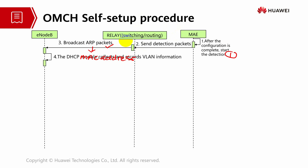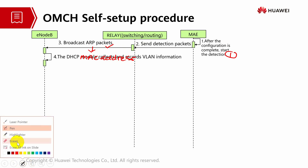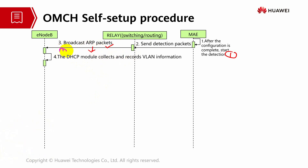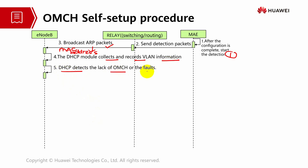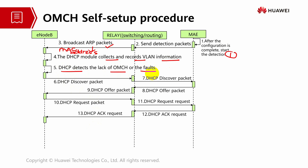The DHCP module will collect and record the VLAN information. The eNodeB first sends the DHCP packet with no VLAN ID, then the DHCP packets are sent with the VLAN ID. By exchanging packets with its gateway and the server, the eNodeB will obtain the OM channel configuration data and validate it. The DHCP module detects any lack of OM channel or faults. Once the eNodeB responds to the overall establishment from the MAE, it can establish the OM channel. If establishment fails, the eNodeB will automatically restart the automatic establishment procedure.